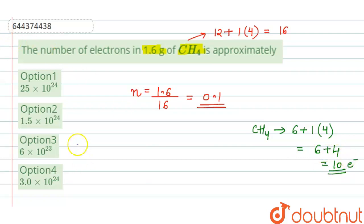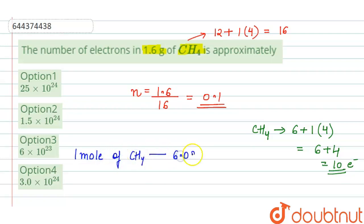As we know, one mole of CH₄ consists of 6.022 × 10²³ molecules.